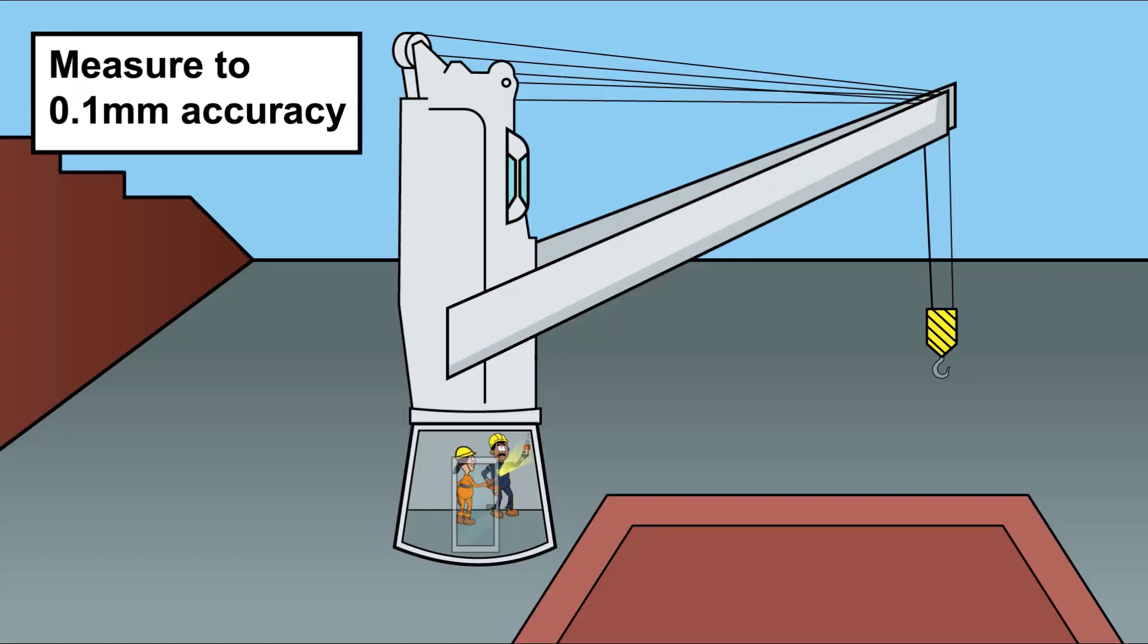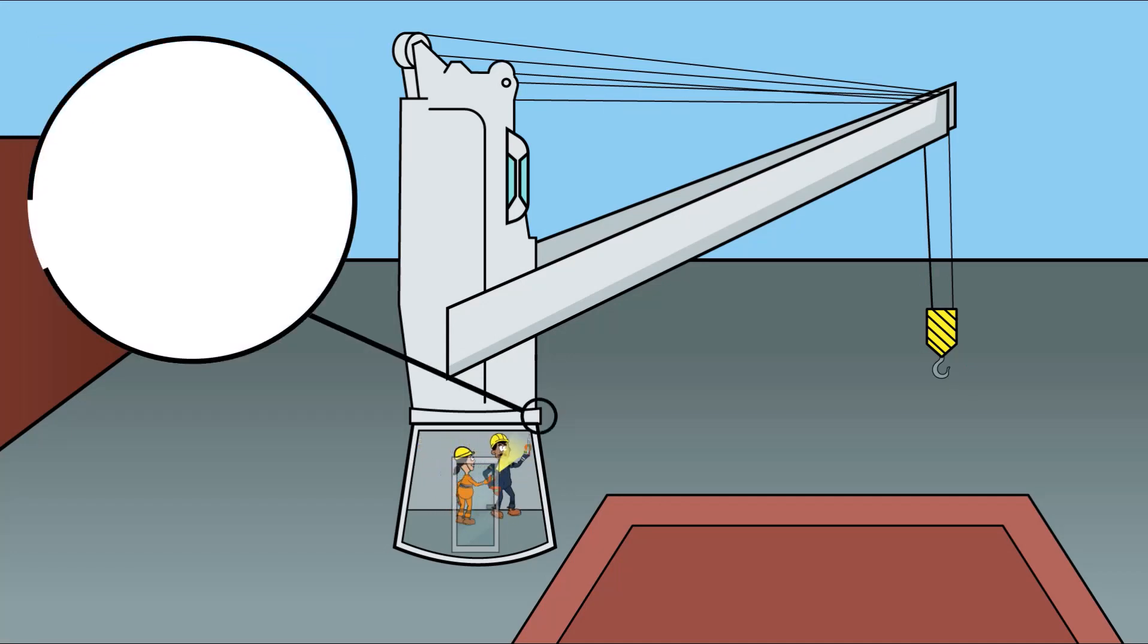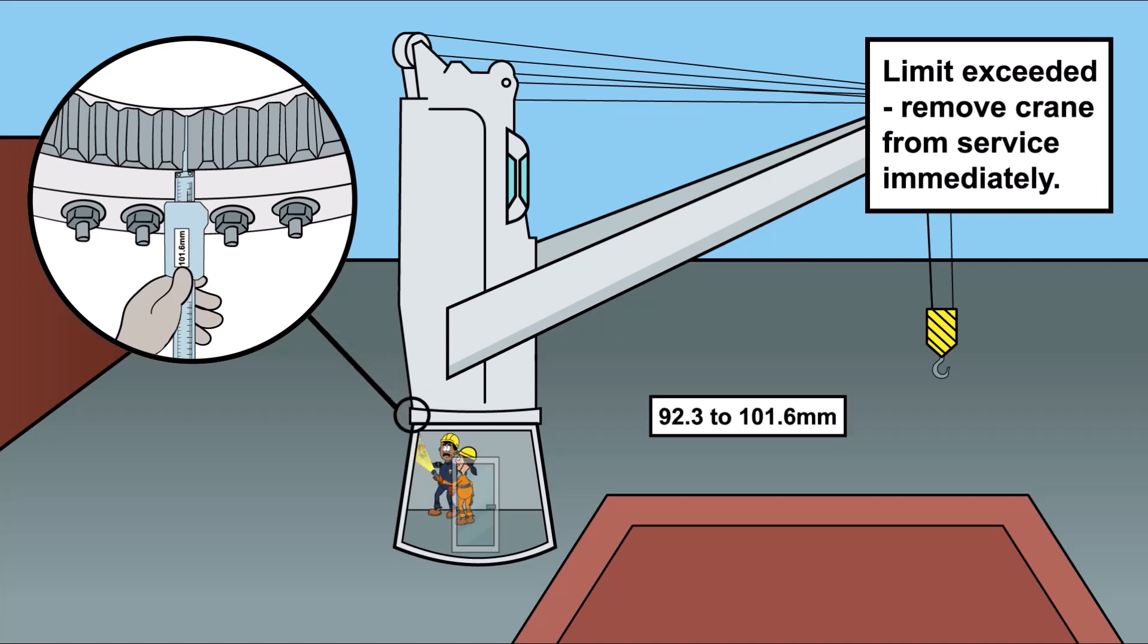Initially, jib should be at maximum outreach and readings taken at both reference points A and B. If the difference in readings exceeds the set limit, then the crane needs to be immediately removed from service.